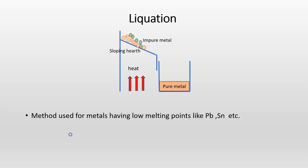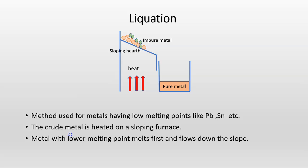The next process is liquation. This is a method used for metals having low melting point like lead or tin. The crude metal is heated on a sloping furnace as shown in the figure.